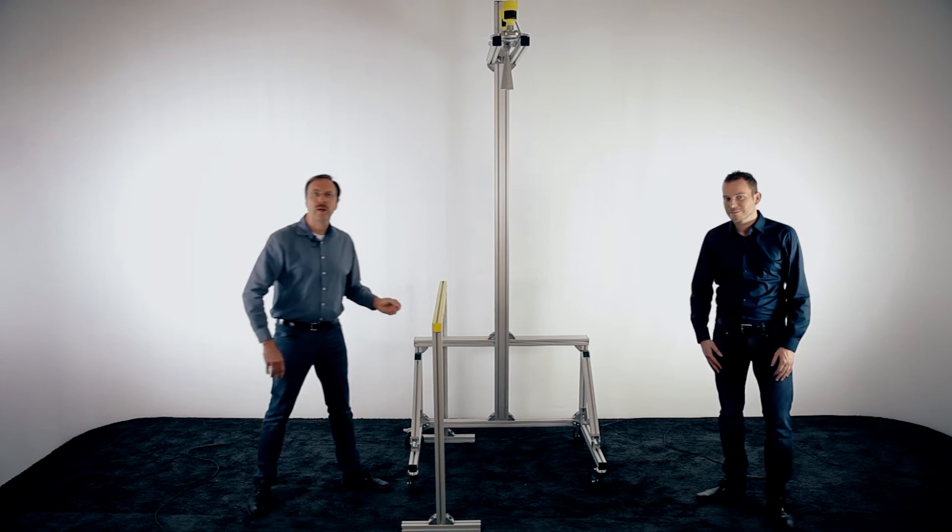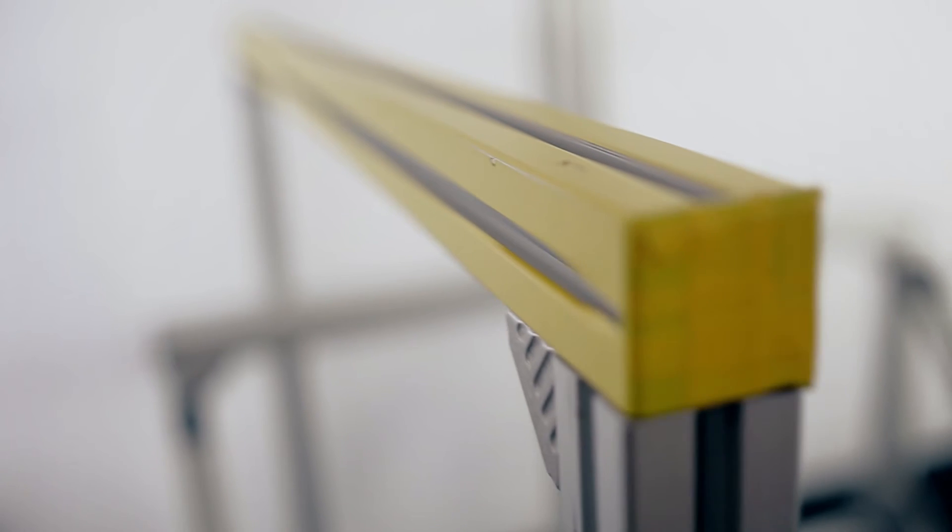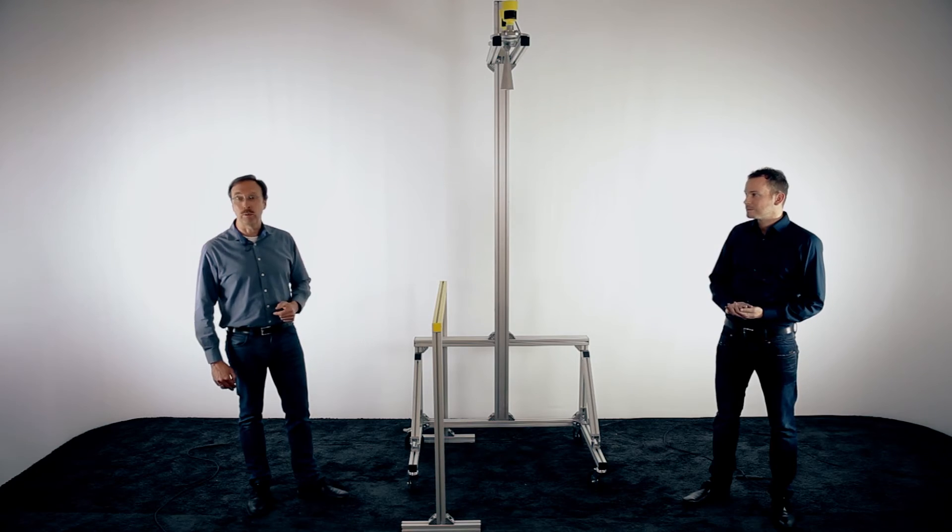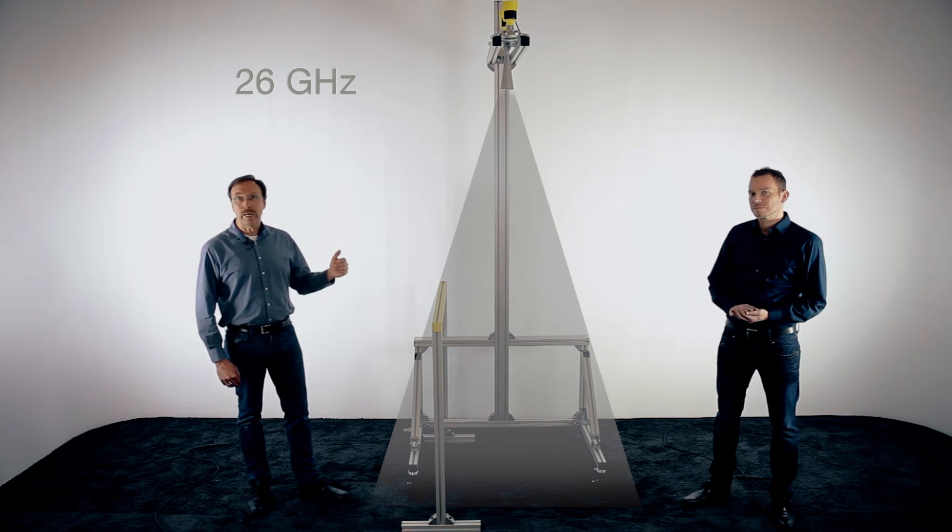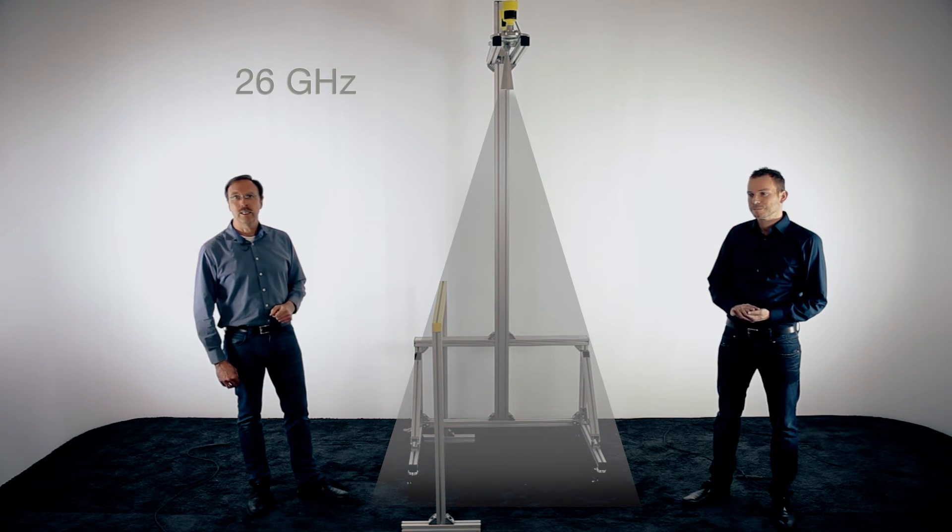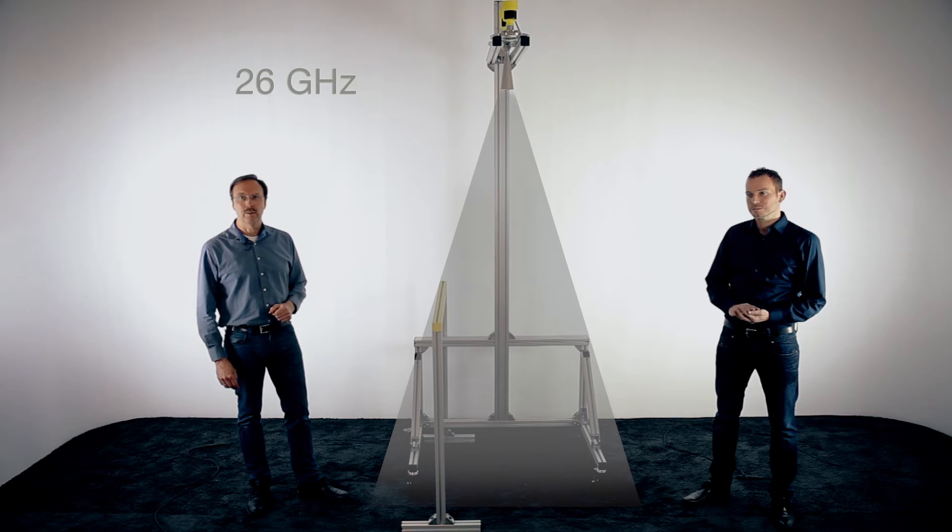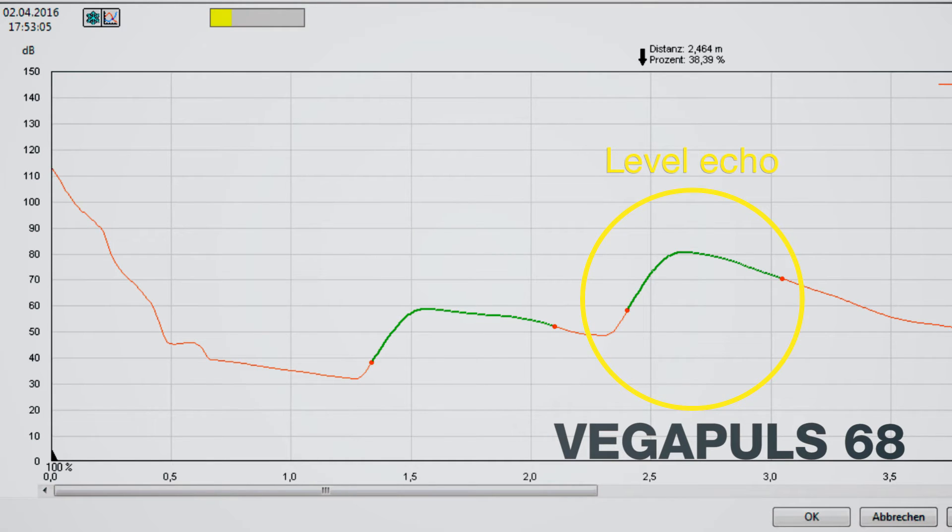So first, we have installed a bracket in a distance of approximately 40 cm from the center of the sensors. The radar beam will hit this bracket because it's inside of the beam angle. On the echo curve, you can see two reflections, one from the ground floor, and also a false reflection from this metal bracket.